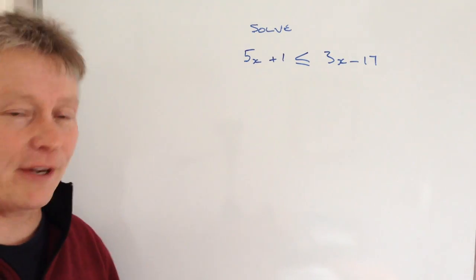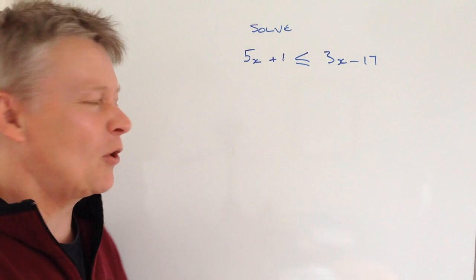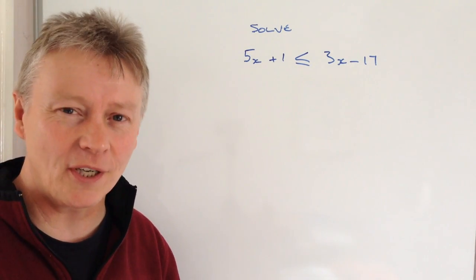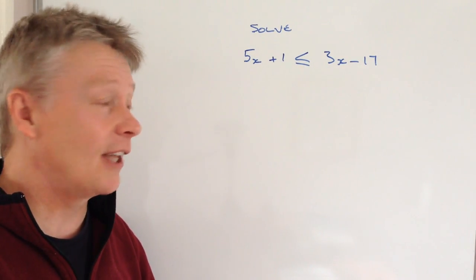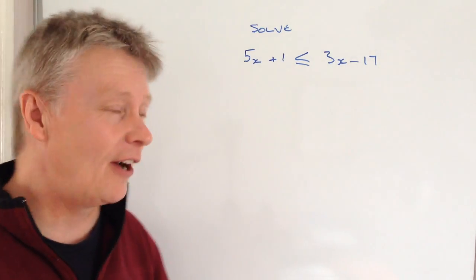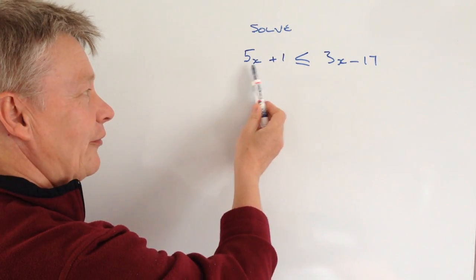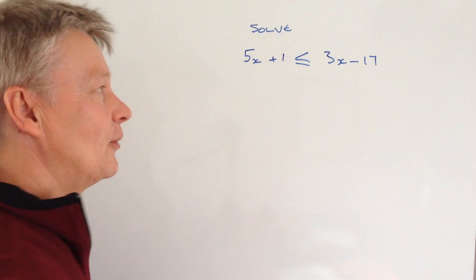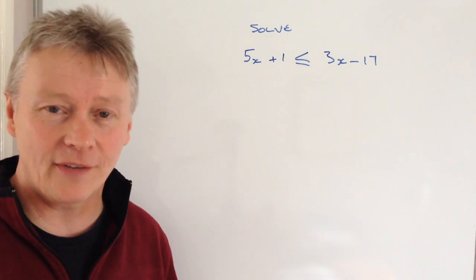This particular one is around about the middle and we've got roughly a C grade question at probably about level 4, maybe level 5. We've got 5x plus 1 is less than or equal to 3x minus 17.